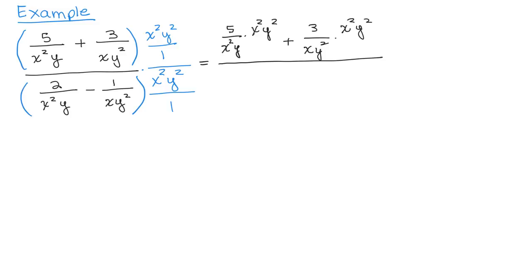Now the denominator, we do the same thing. We have to distribute. So we have 2 over x squared y times the x squared y squared minus 1 over x y squared times the x squared y squared.